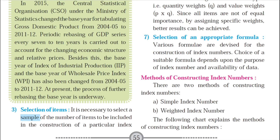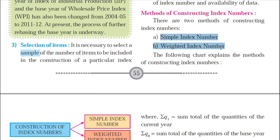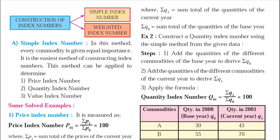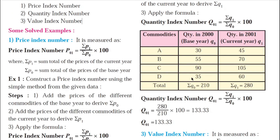Let us now have a look at the methods of constructing index numbers. There are two main methods: simple index number and weighted index number. In the simple index number method, every commodity is given equal importance. This method can be applied to price index, quantity index, and value index.